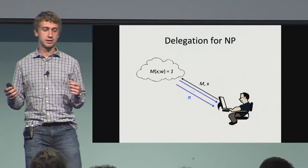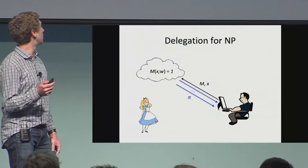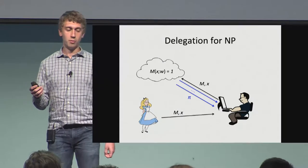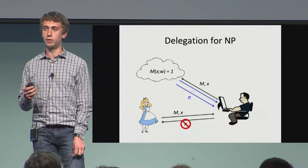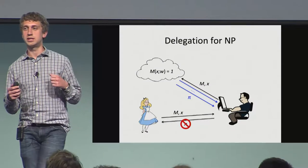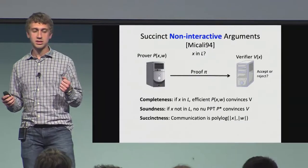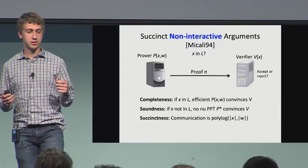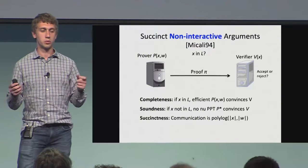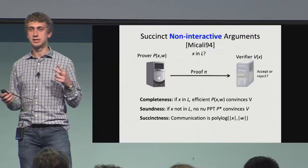The problem with this setting is that if another person comes along and also wants to be convinced of the statement, Bob is not able to just forward the proof over — she would have to ask the server to redo the interaction. So ideally what we want is succinct non-interactive arguments, where the prover's communication to the verifier is just a single message — which we'll call the proof pi — still satisfying the same notions of completeness, soundness, and succinctness.